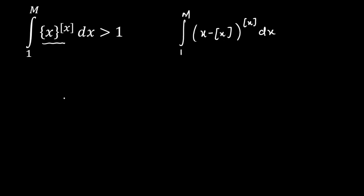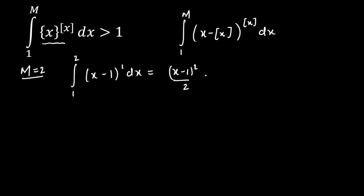Since we have to find the smallest value, we go one by one, starting with m = 2. For the integral from 1 to 2, since x is varying from 1 to 2, gif(x) is the fixed value 1, so we get the integral of (x − 1)¹ dx. This evaluates to (x − 1)²/2 from 1 to 2, giving 1/2 − 0 = 1/2. Since 1/2 is not greater than 1, m = 2 is rejected.